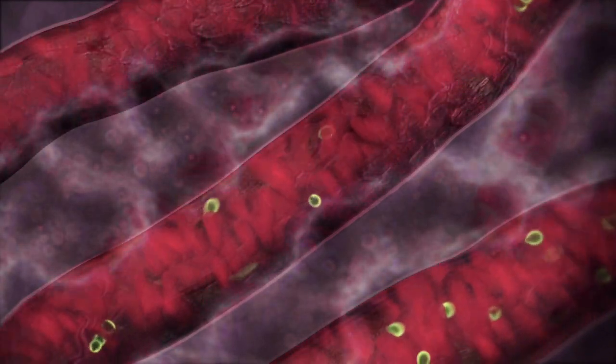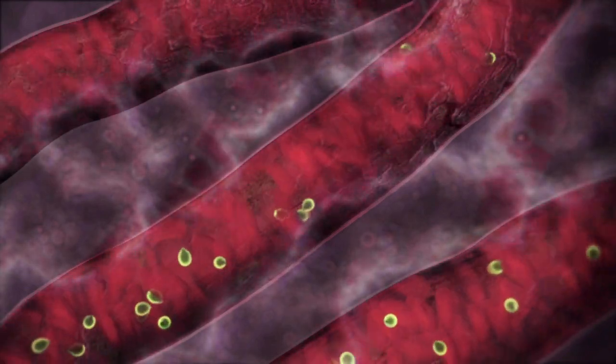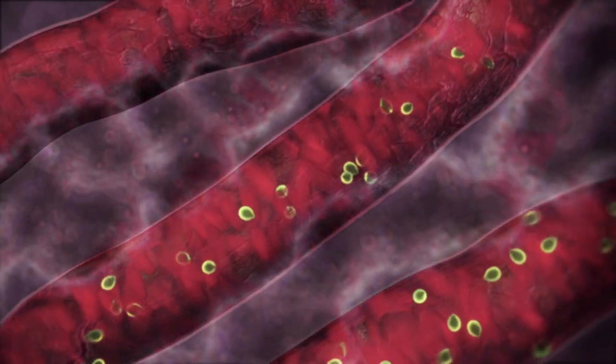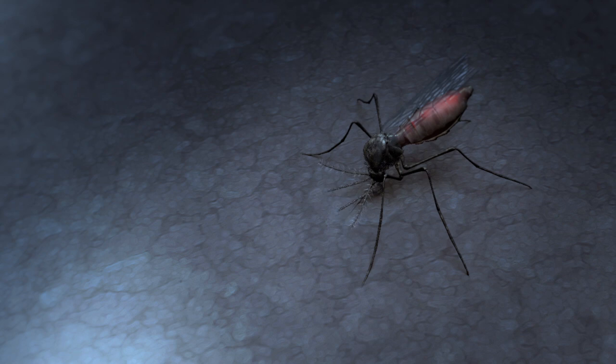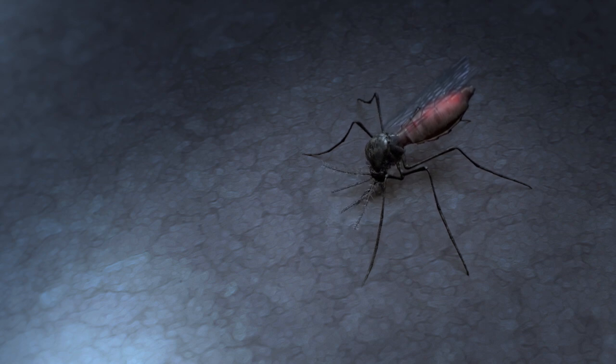Malaria victims suffer fever, loss of blood, convulsions, brain damage, and coma. Countless millions have been killed by it. Most people who die from the disease are pregnant women and children under the age of five.